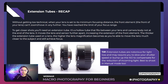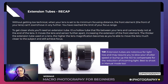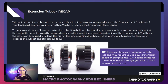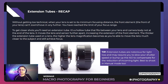Extension tubes come in various sizes and you can stack them together, but I'd recommend starting with the smallest one — a 12mm tube for example. Attach it, check your magnification, confirm you can still get a sharp image, then try the next size up. Do some testing before heading out into the field. One important thing: extension tubes are notorious for light loss, so you may need to open your aperture, raise ISO, or slow your shutter speed.